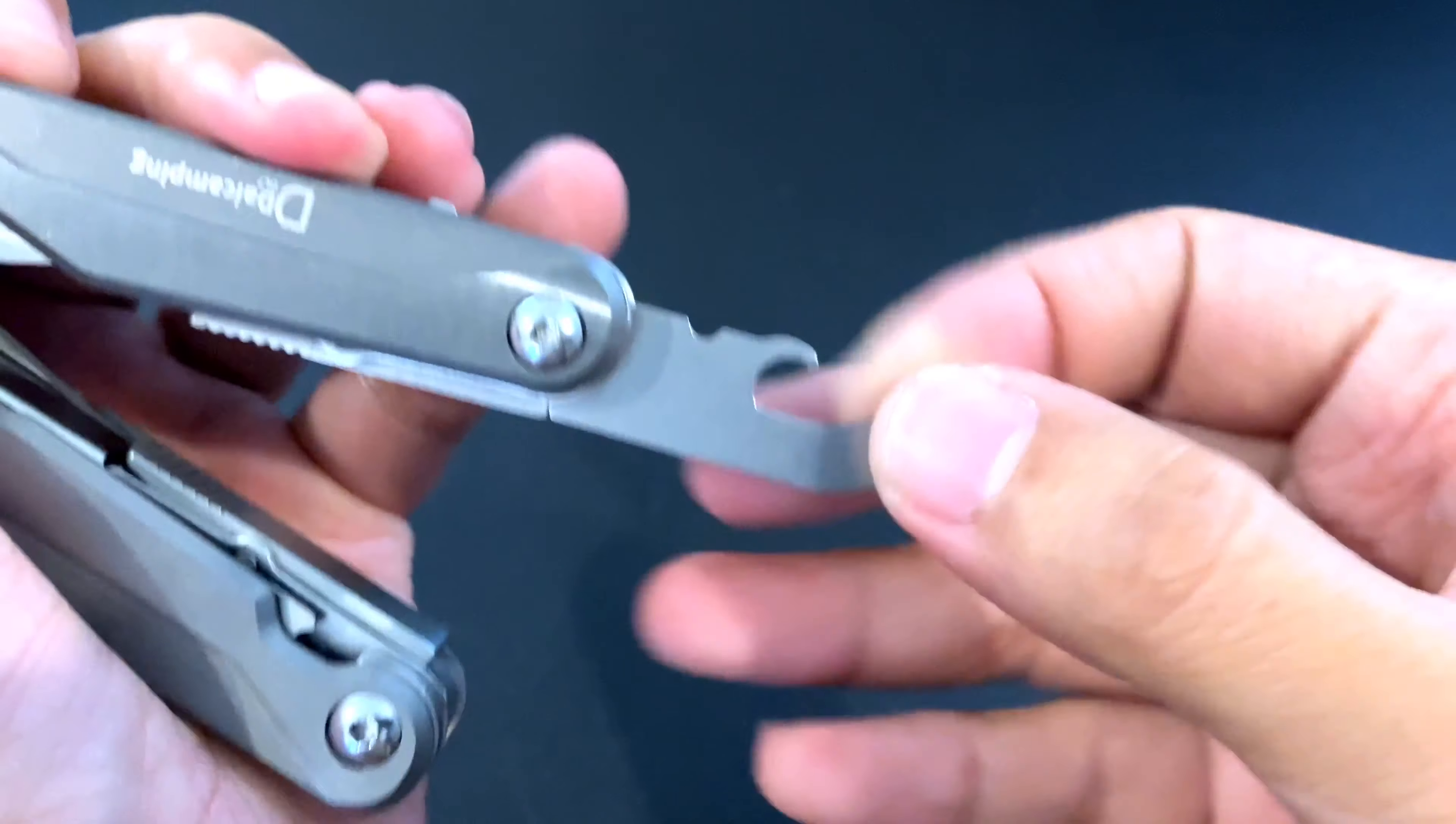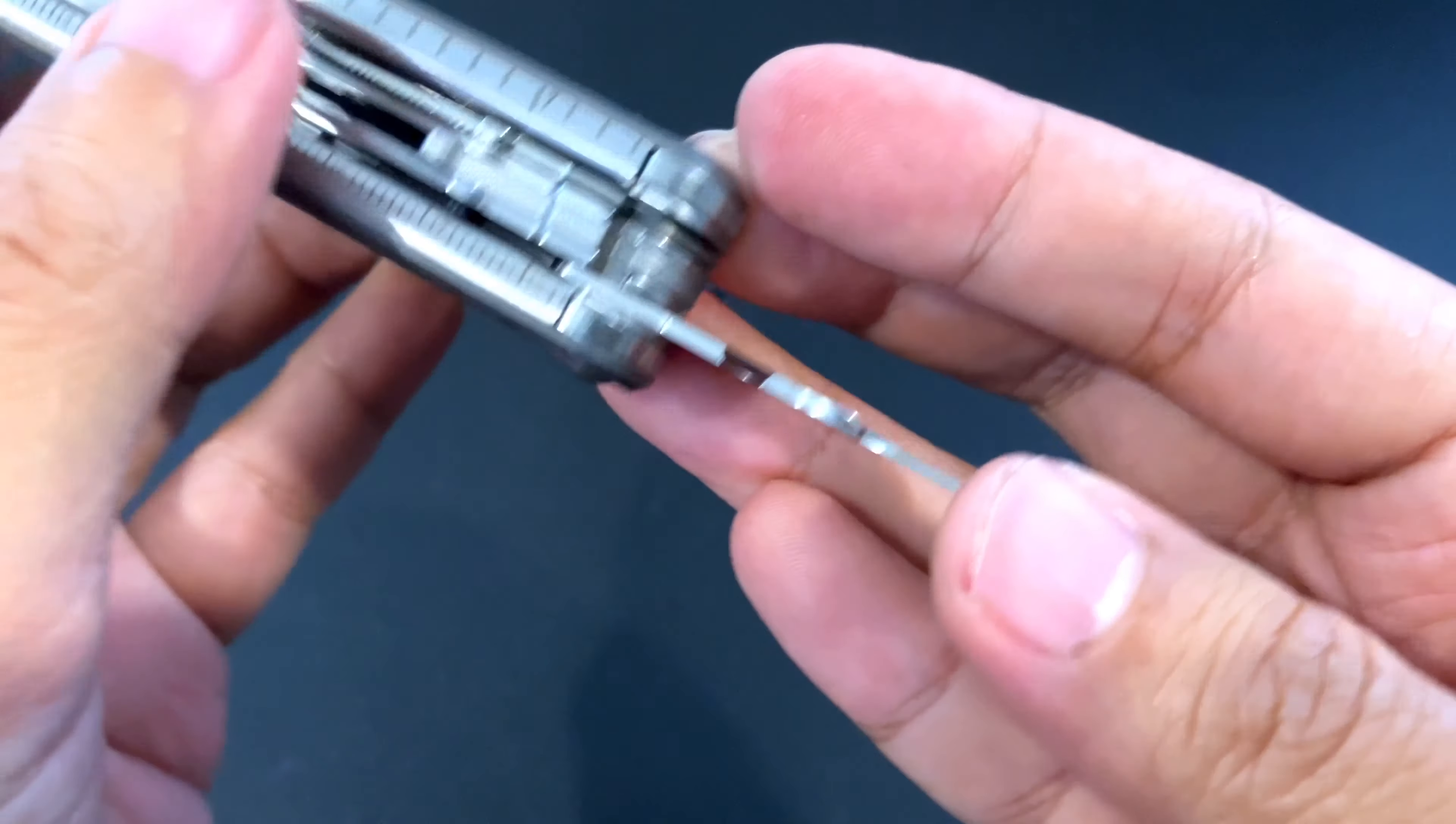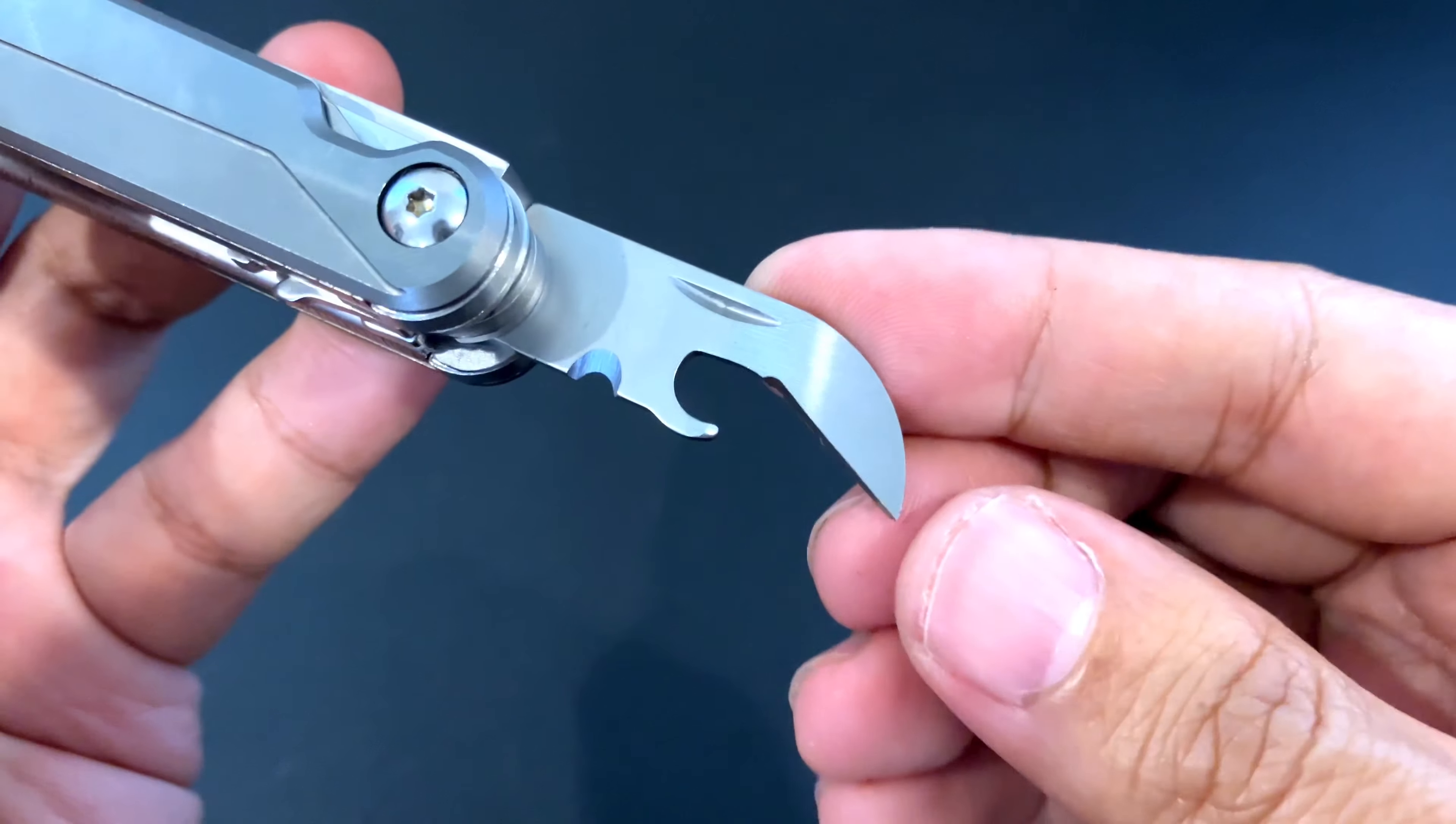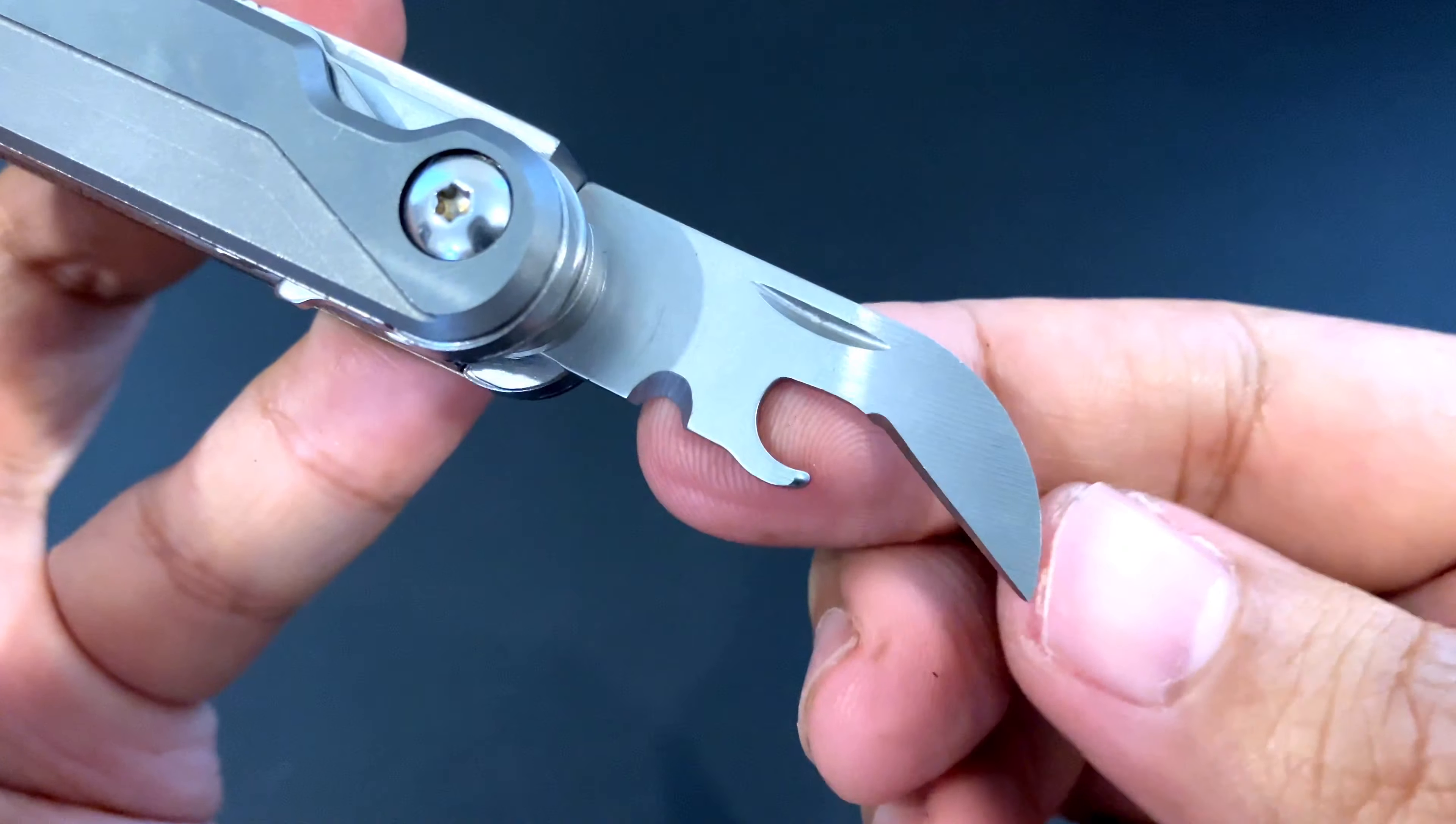Finally, you have a can opener, bottle opener. And of course, it can also be used as a package opener. This is pretty sharp. And then we have here a wire stripper.